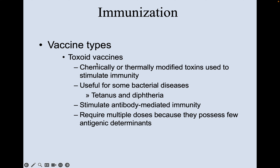The third type are toxoid vaccines, like the tetanus one mentioned in our graph. These are chemically or thermally modified toxins used to stimulate immunity. They're useful for bacterial diseases like tetanus and diphtheria, and they stimulate antibody-mediated immunity. They require multiple doses because they possess fewer antigenic determinants — which is probably why Tdap (tetanus, diphtheria, and pertussis) is the most common booster shot we get as adults.